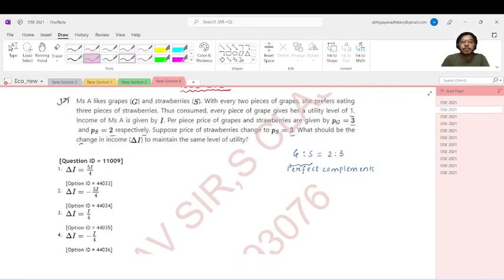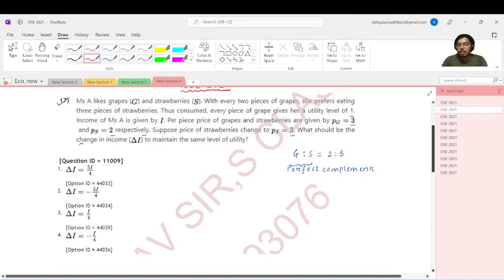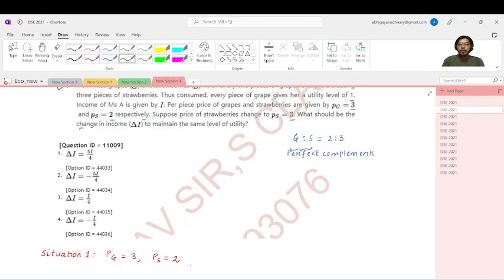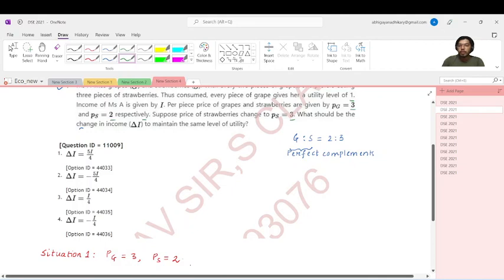So first of all, let us first see that in the initial situation, let's call it situation one, where the price of grapes is three and price of strawberries is two. For that we need to understand what is the utility function over here. You can see that the grape ratio is actually two, the strawberries ratio is actually three. We need to have a perfect complementary function which is minimum. So how do we get the minimum? We basically swap the coefficients. So we get 3G comma 2S. So this is my utility which is minimize of 3G comma 2S, and my budget constraint is I equals 3 times G plus 2 times S.